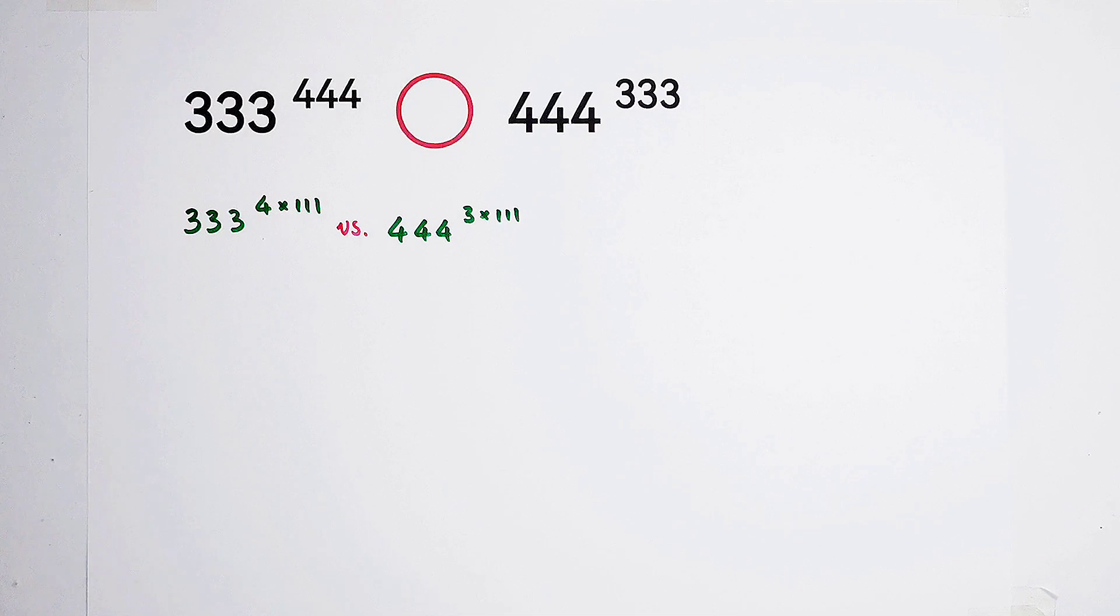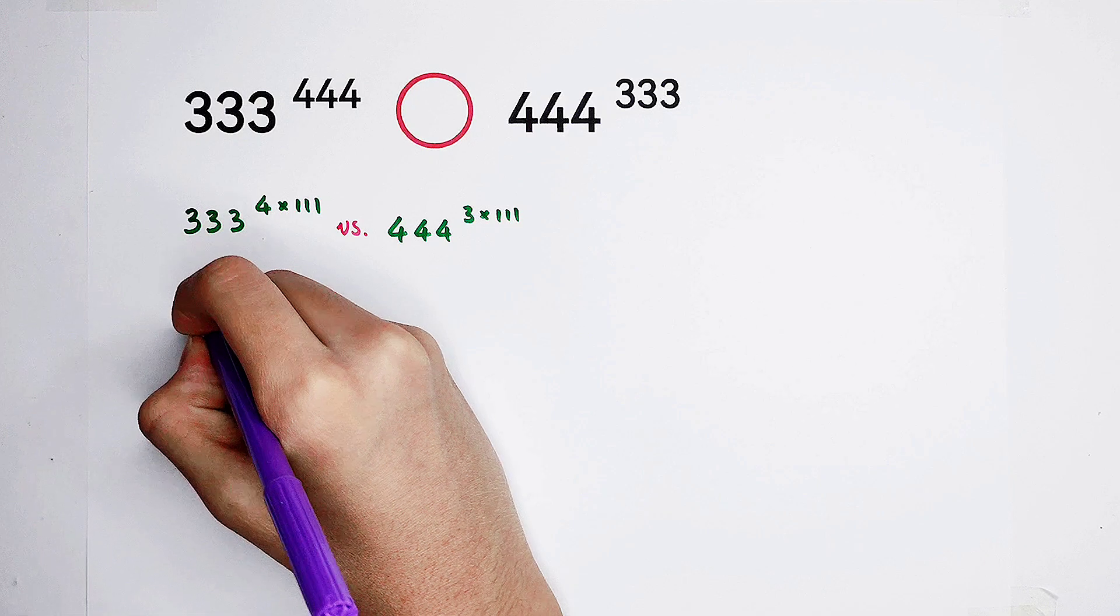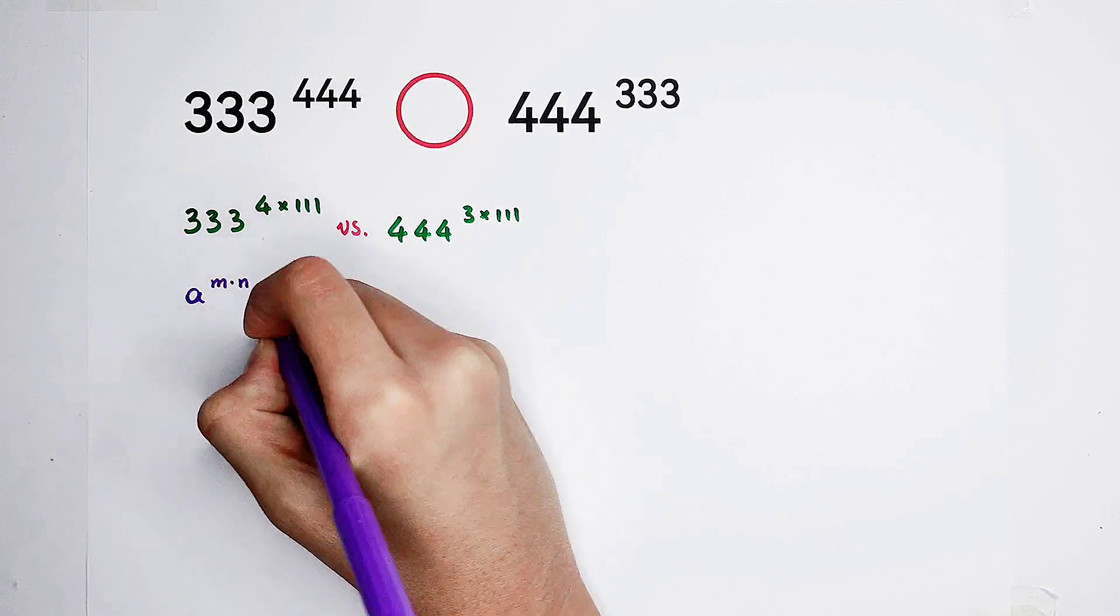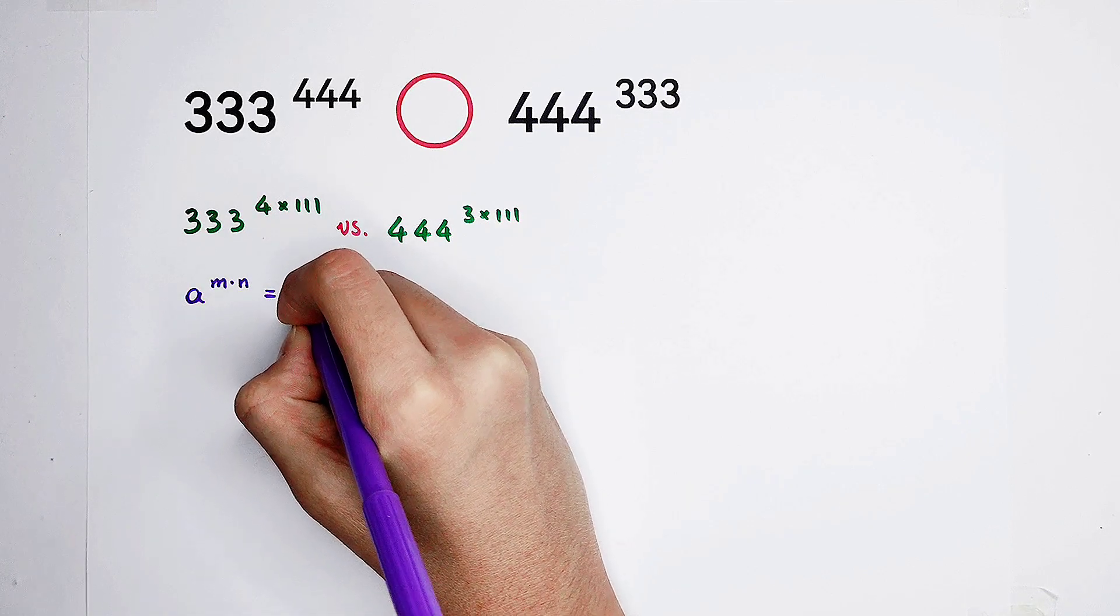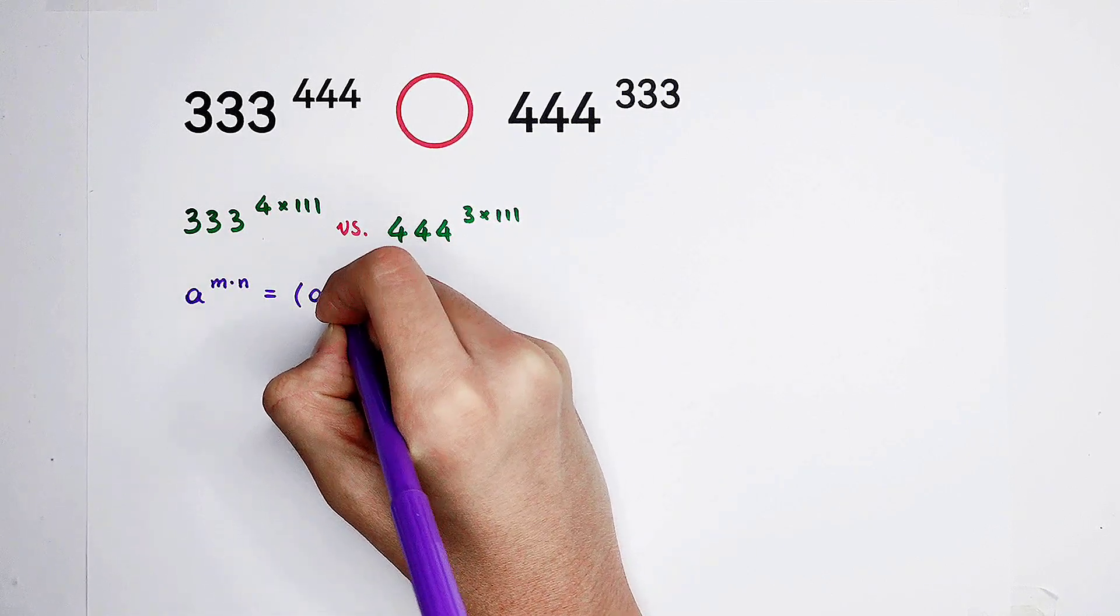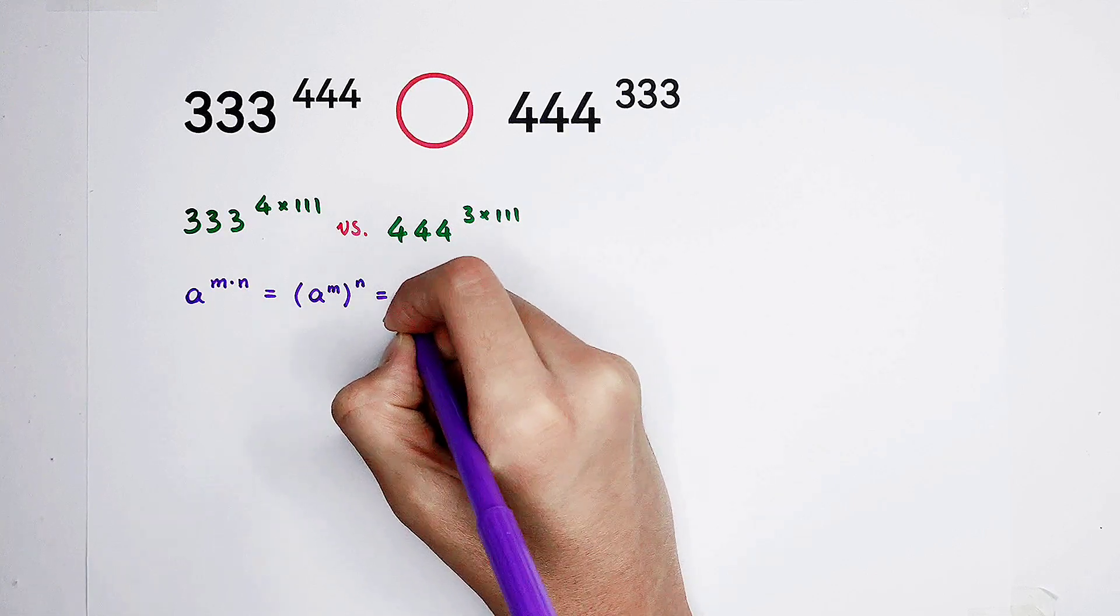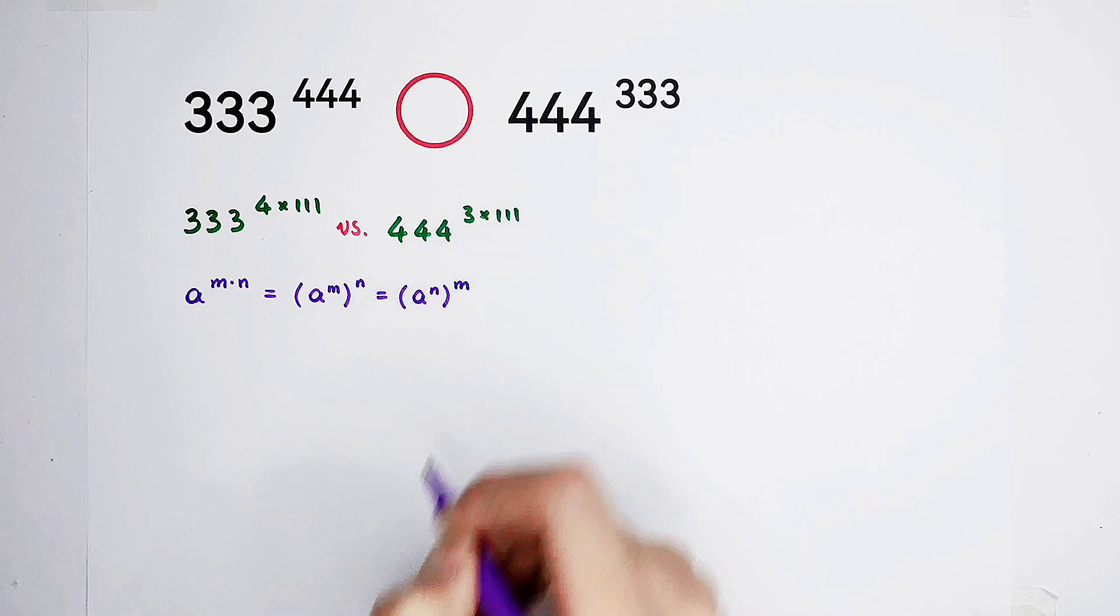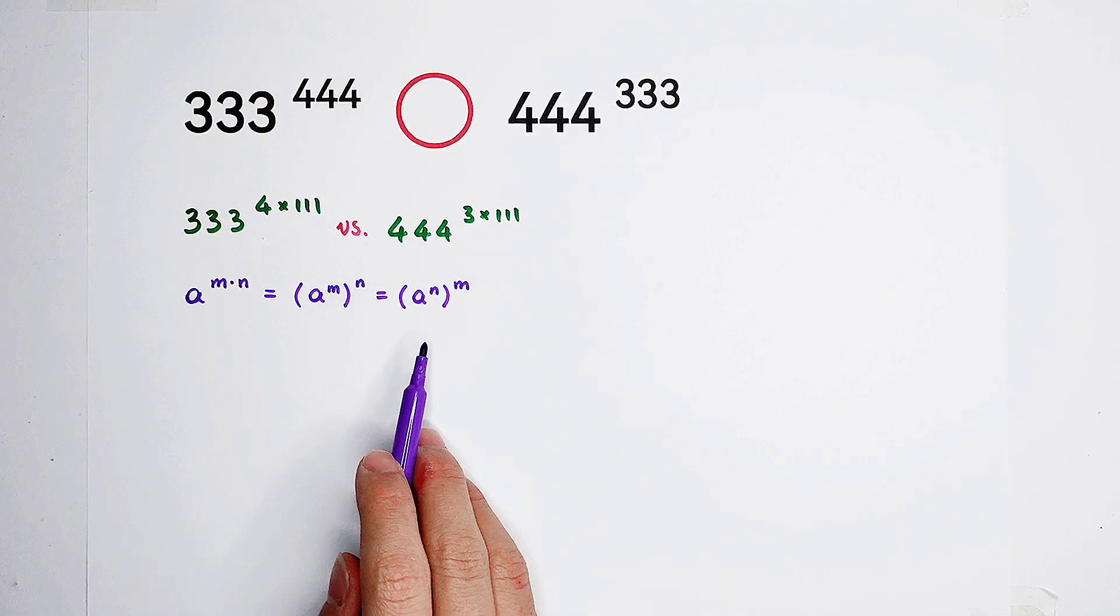Then, according to the formula, which formula? This one. A to the power of m times n, it can be written as a to the power of m, then all to the power of n. It can also be written as a to the power of n, all to the power of m. A formula for the exponential operations.